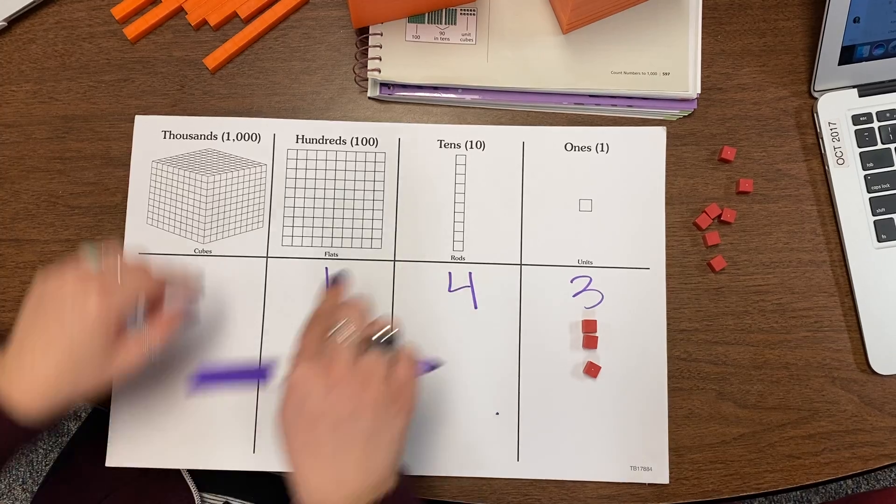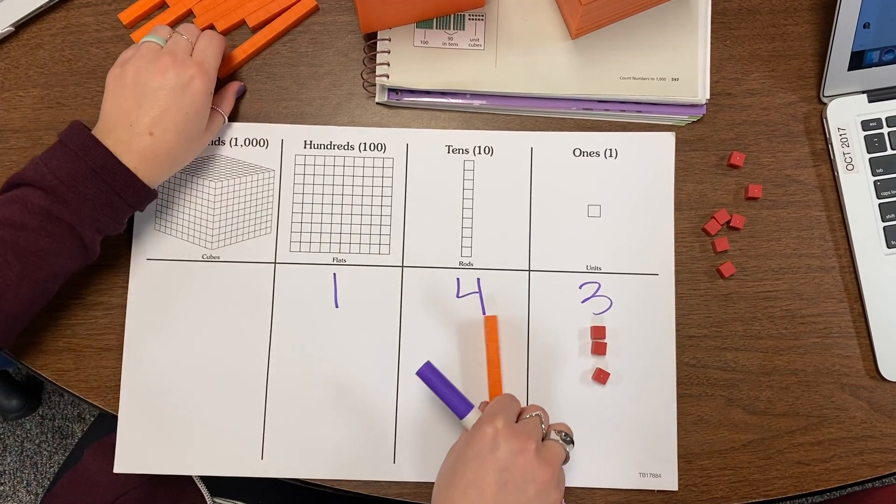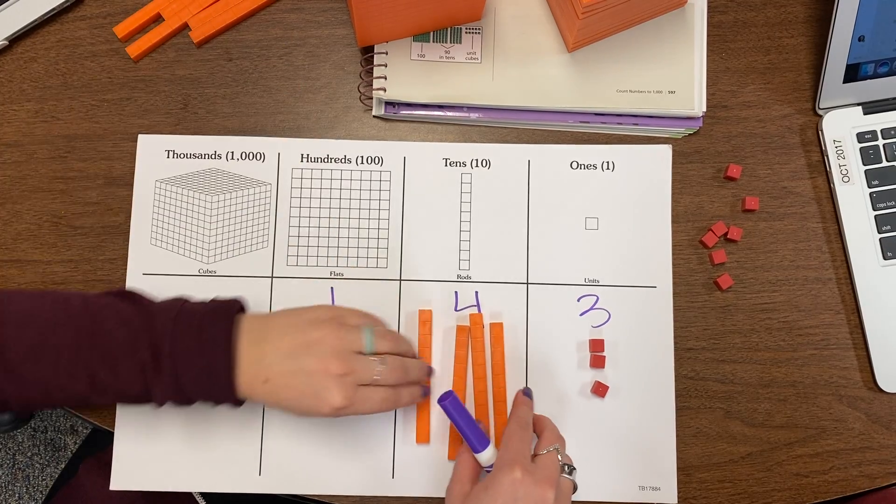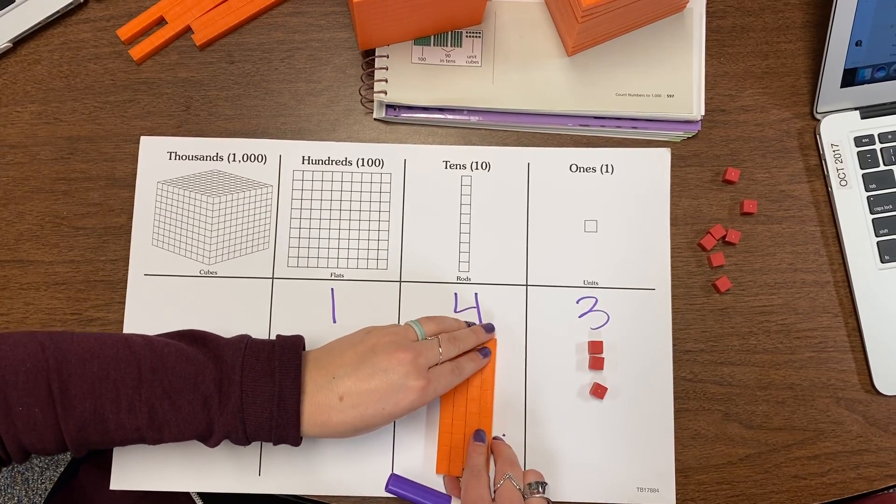We need 4 10's sticks. So we have 10, 20, 30, 40 to represent 4 10's which is 40.